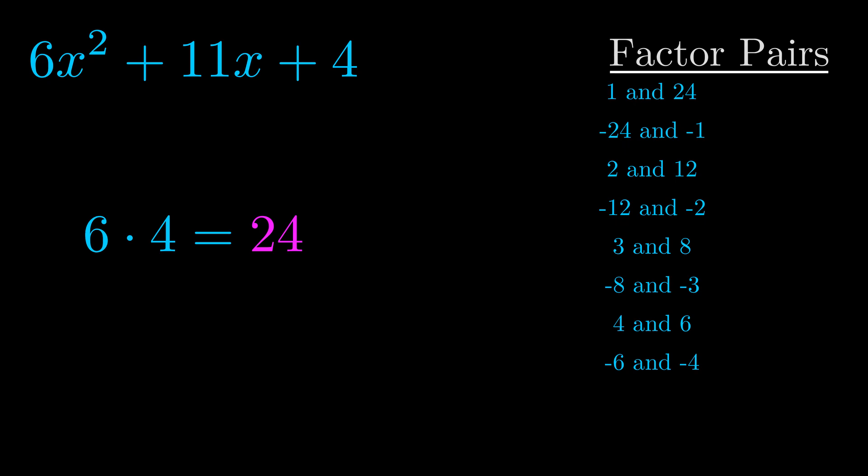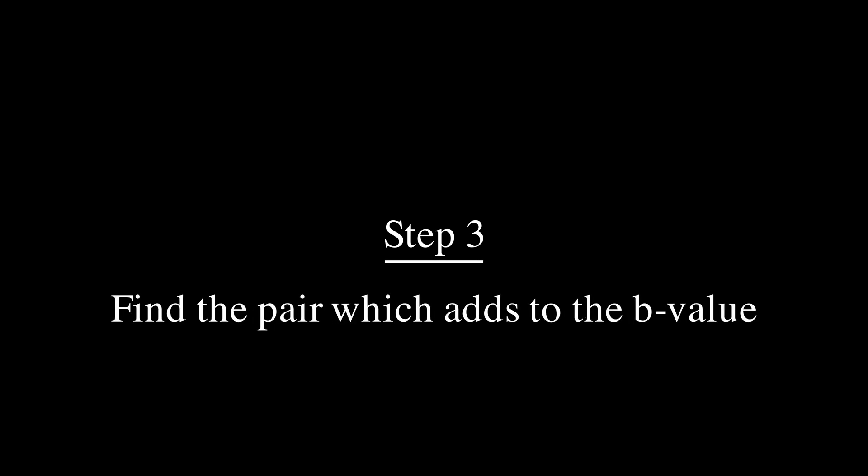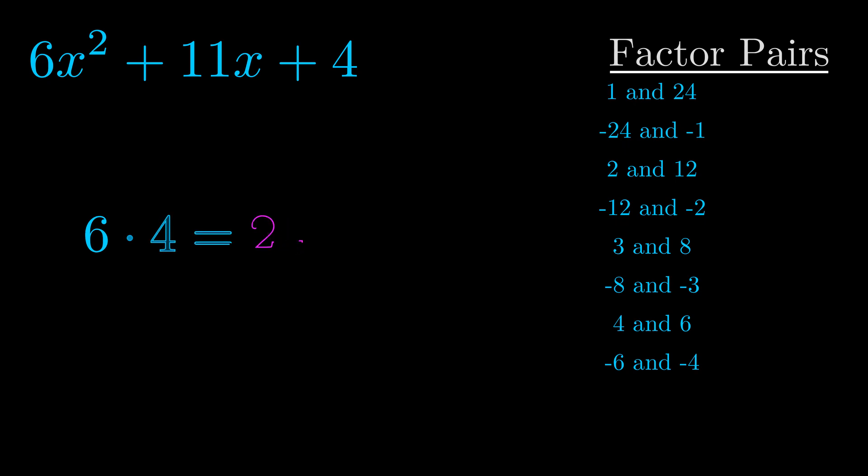Now once you have these factor pairs the goal is to find which of these pairs adds to the b value. The b value is the coefficient on the x term. That's the middle term, the one that we haven't done anything with yet. And really this is the only factor pair that we need.